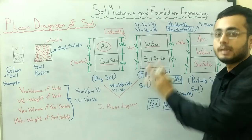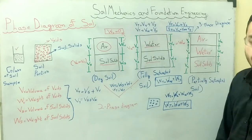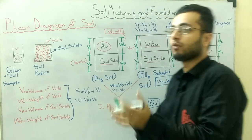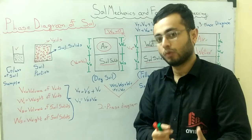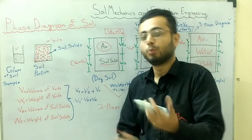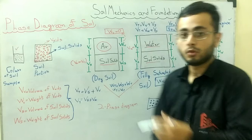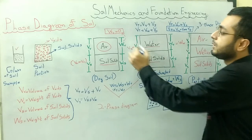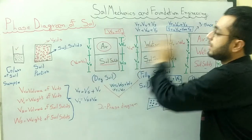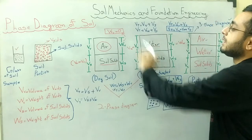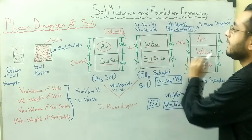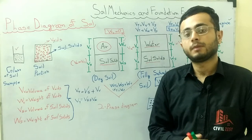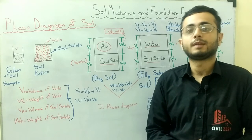To sum up, we have seen the total volume and total weight equations for all three phases: dry soil, fully saturated soil, and partially saturated soil. A soil sample consists of voids and soil grains. The voids can contain water, air, or both, and based on this we classify soil into the three types. All these diagrams are referred to as phase diagrams of soil. Hope the concept of the phase diagram is clear. If you like the video, please subscribe to the channel. Thank you.